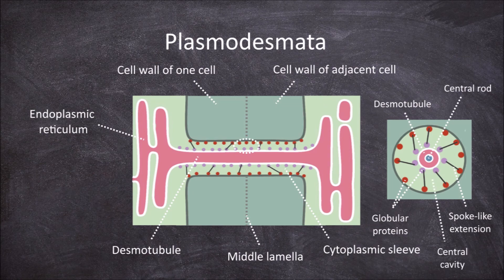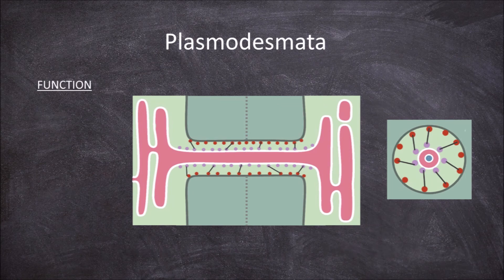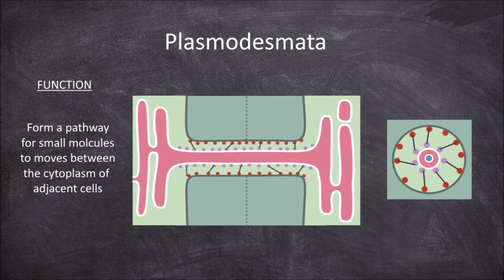The function of the plasmodesmata is in forming a pathway for small molecules and other substances such as plant hormones to move between the cytoplasm of cells.